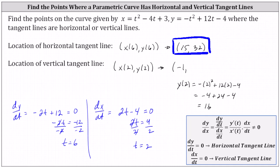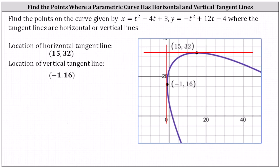The point on the curve where the curve has a vertical tangent line is negative 1 comma 16. Now let's check this graphically. The curve given by the parametric equations is graphed in purple. Notice at the point (15, 32) the curve does have a horizontal tangent line, and at the point (negative 1, 16) the curve does have a vertical tangent line. The graph verifies our work is correct.